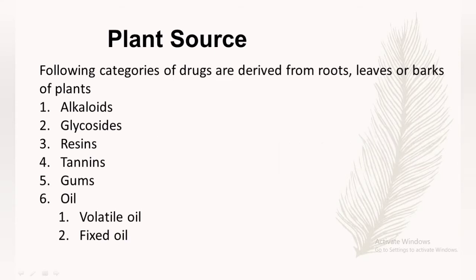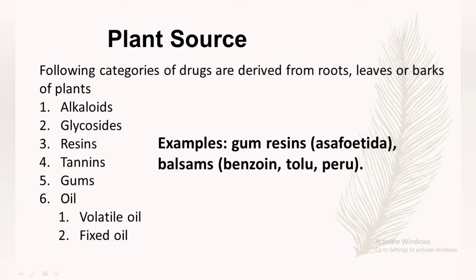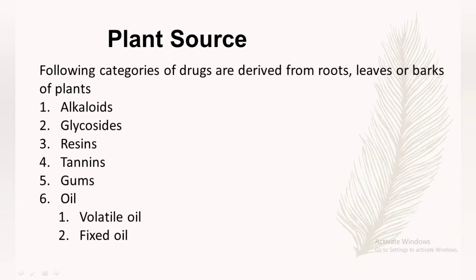Resins are solid substances found in plants and are polymers of volatile oil. They are produced by the oxidation and polymerization of volatile oils. They are insoluble in water but soluble in alcohol, chloroform, and ethers. Examples of resin include gum resin, also known as asafoetida — called 'hing' in Hindi and Nepali — used as a carminative and spice in cooking. Balsams such as benzoin, tolu, and peru are also examples of resin.